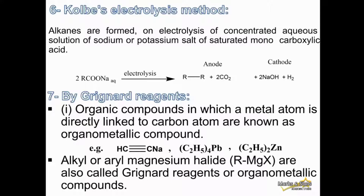Method six is Kolbe's electrolysis method, another method of preparation of alkanes. Alkanes are formed on electrolysis of a concentrated aqueous solution of sodium or potassium salt of a saturated monocarboxylic acid. If you do electrolysis of this salt, you get alkanes at the anode and sodium hydroxide at the cathode.